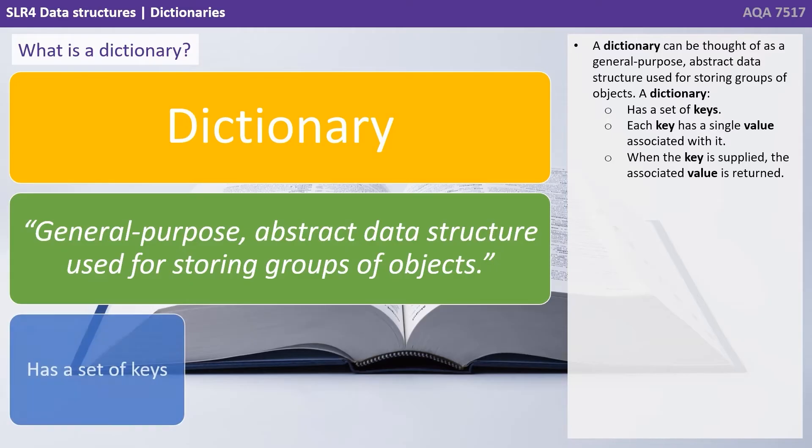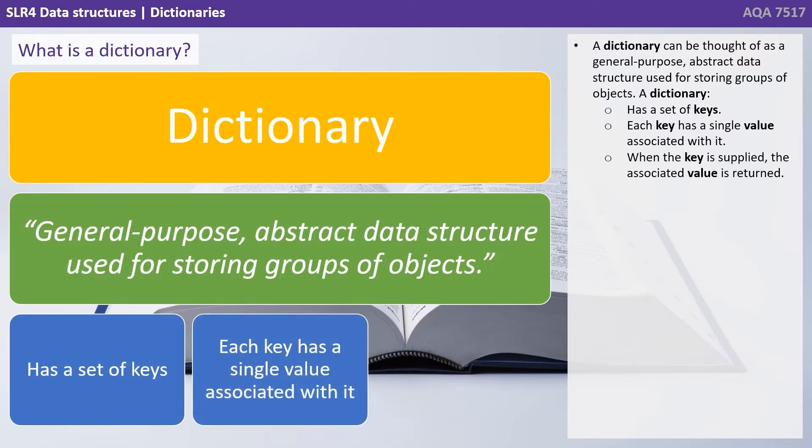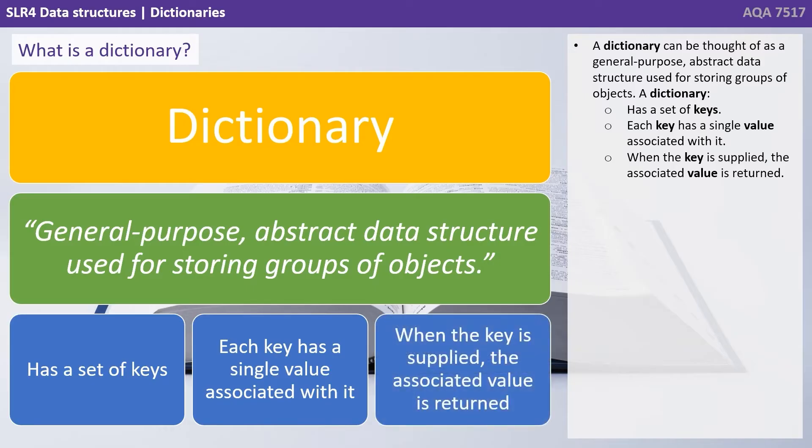A dictionary has a set of keys. Each key has a single value associated with it. When the key is supplied, the associated value is returned.